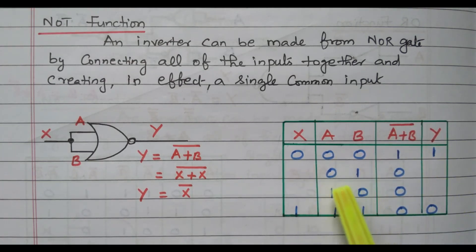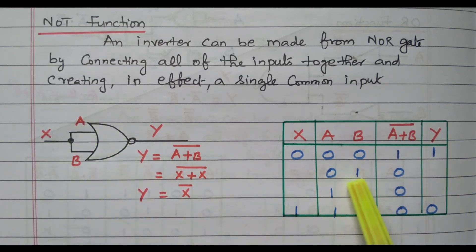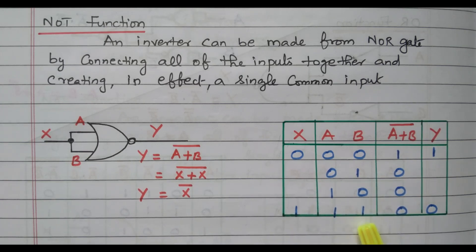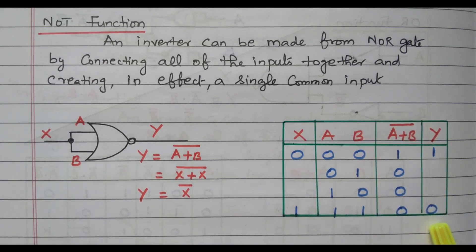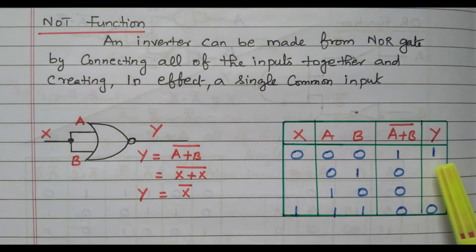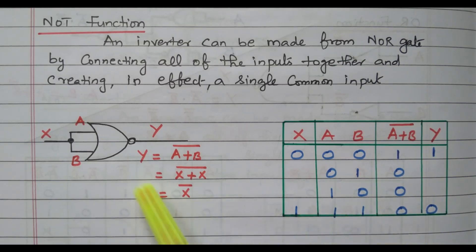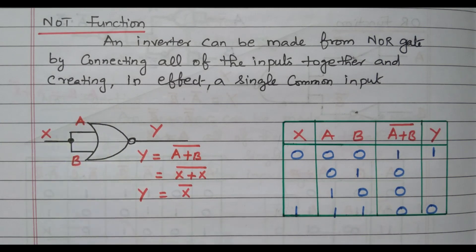The combinations 0,1 and 1,0 are not applicable because A and B are equal — they are the same input, so different inputs are not possible here. If X is 1, then A is also 1 and B is also 1. So 1 plus 1 is 1; while taking the complement it becomes 0. So if the input is 1, the output is 0. We got the NOT operation using the NOR gate by connecting both inputs together with a common input.